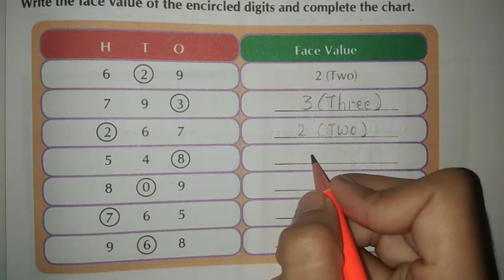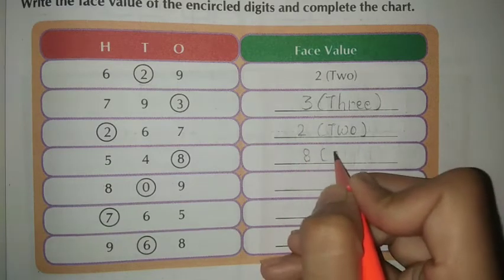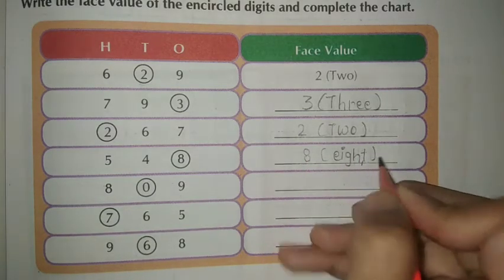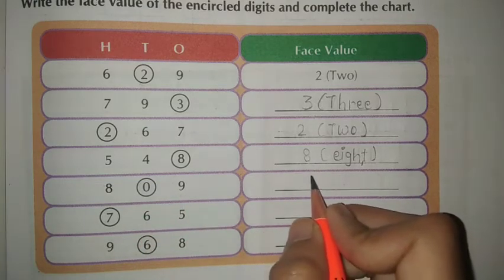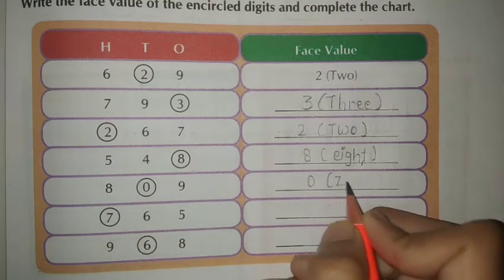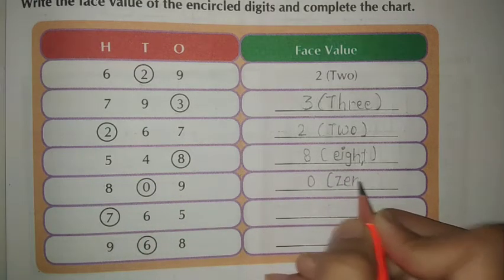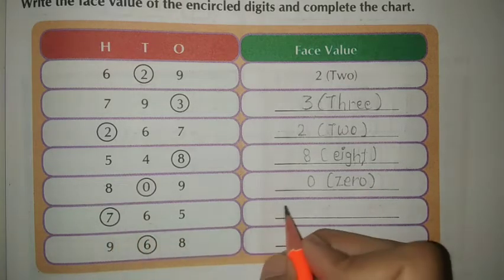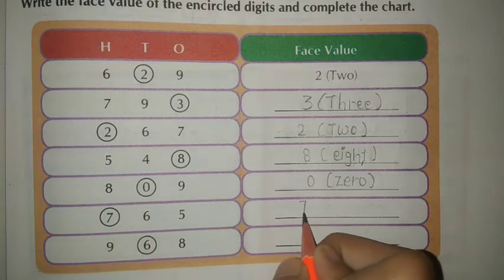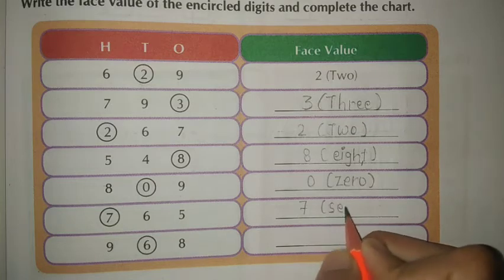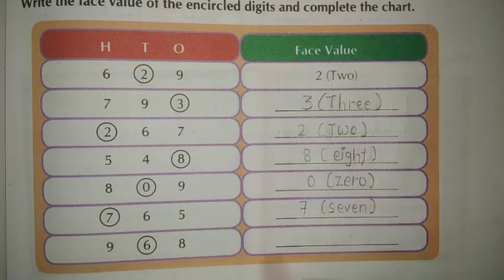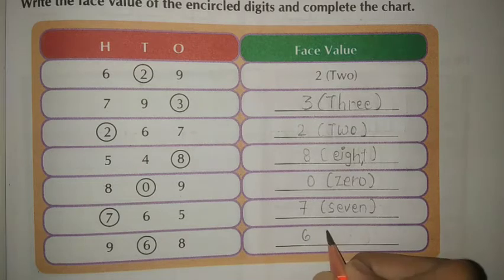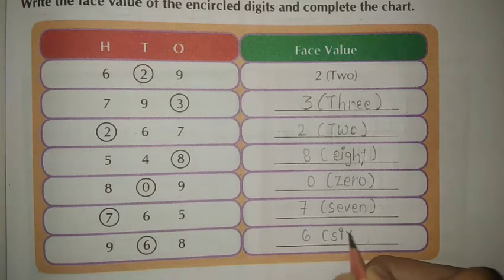548 — face value is 8. 809 — face value is 0. 765 — circle on 7, so write 7. 968 — circle on 6, here write 6.